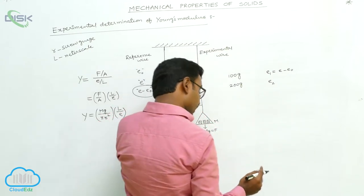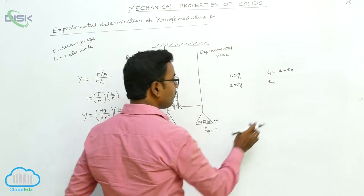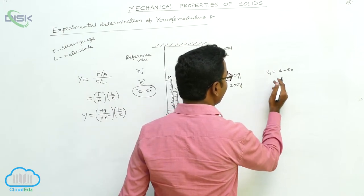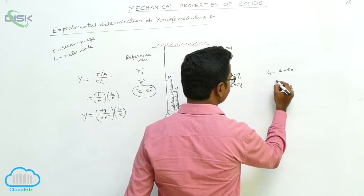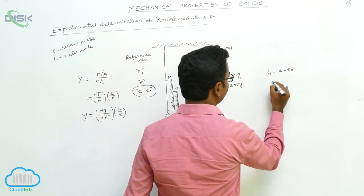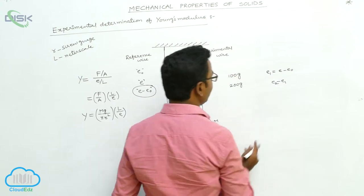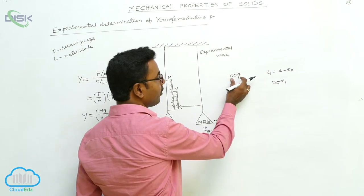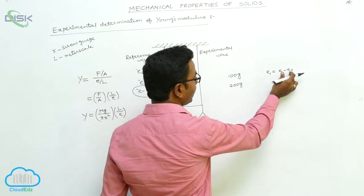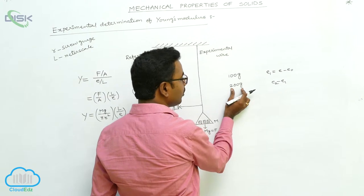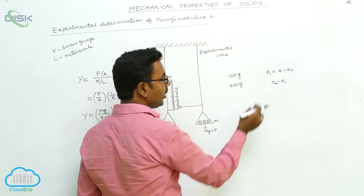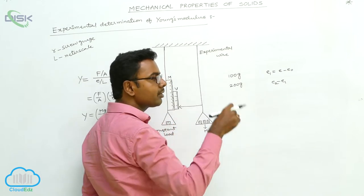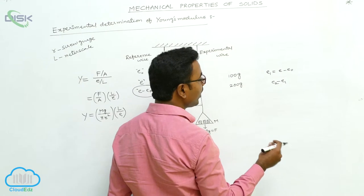The elongation for 200 grams can be found like this: the total reading is E2, so the elongation is E2 minus E1. Only for the second 100 grams, the elongation is E2 minus E1. The first 100 grams elongation is E minus E0, and only for the second 100 grams mass, the elongation is E2 minus E1.